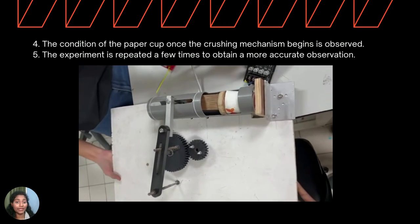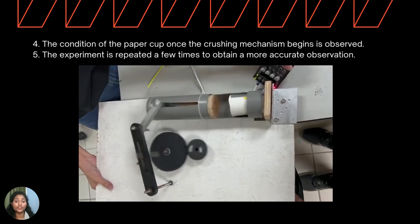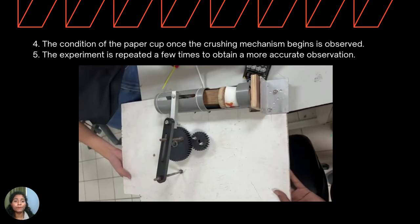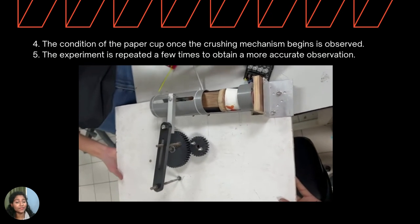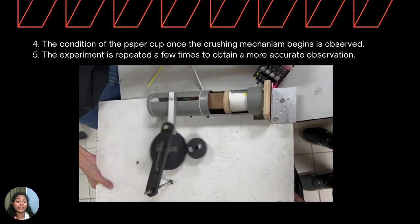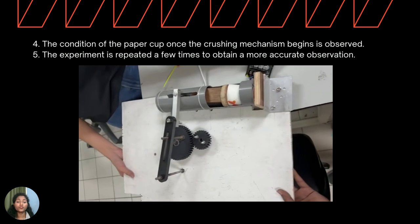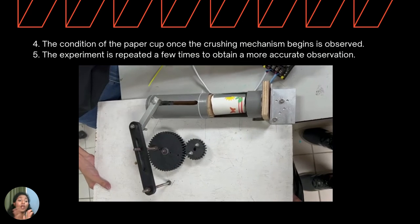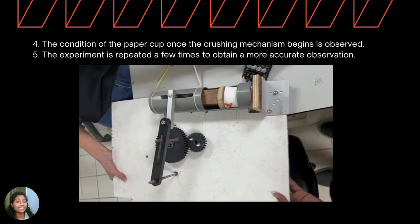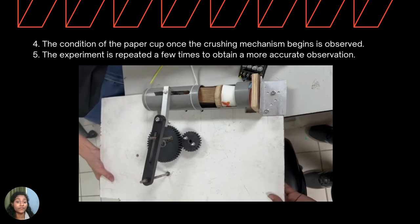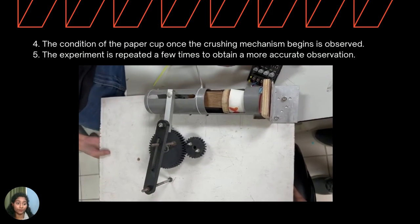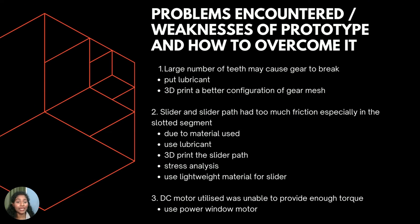We then placed the specimen — the paper cup — in the slot, switched on the circuit to run the crusher machine, and observed the condition of the paper cup. We repeated the experiment a few times to obtain a more accurate observation. However, the torque transmitted was not strong enough to smash the paper cup completely. Over time, the links of the crusher machine also loosened due to extreme stress and started rotating in the opposite direction. This was one of the biggest challenges we faced throughout the production of the prototype, but we were able to identify possible causes and tried our best to rectify them.